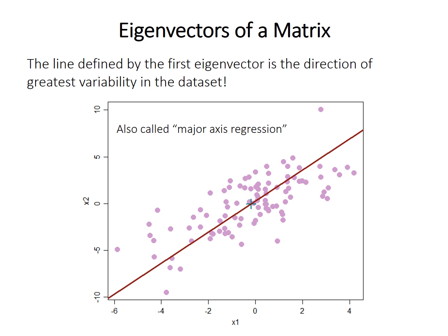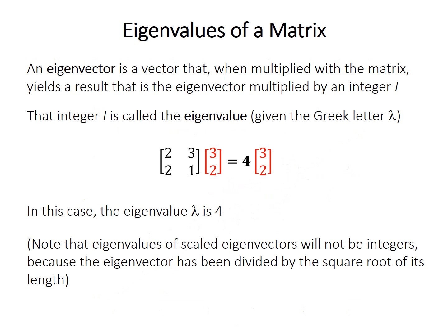We need one more piece of information to rescale this graph and remove covariance. Remember that the definition of the eigenvector had this integer i: the eigenvector multiplied by i equals the matrix multiplied by the eigenvector. That integer i is called the eigenvalue, given the Greek letter lambda. So we have the eigenvector and the eigenvalue.